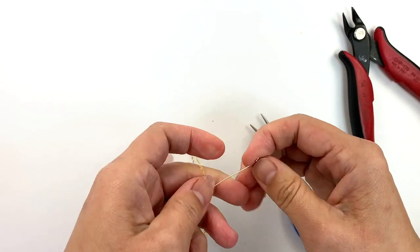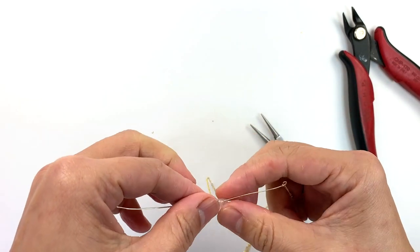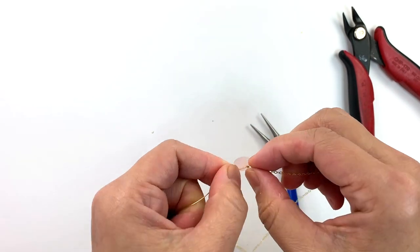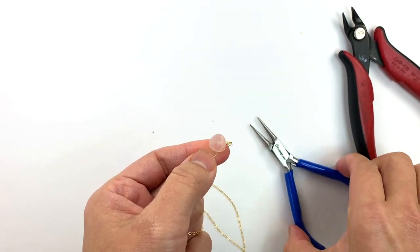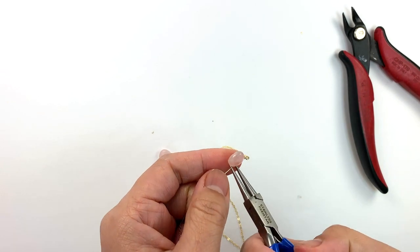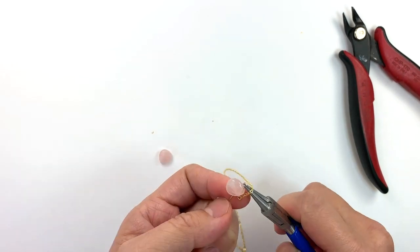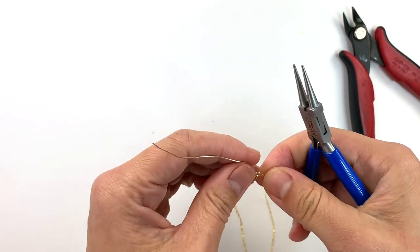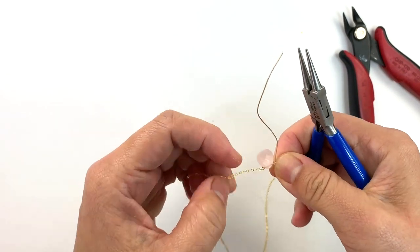Then I'm going to trim and slide that along this way. You could decide to do more loops if you want, however long you want that. Just make sure that you do the same on the other side.